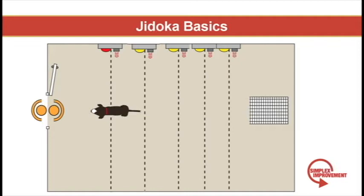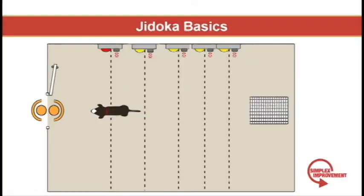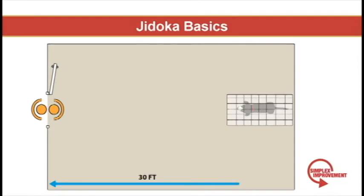If I want to prevent defects, I'd have to go back to the source. The source is the process I used to lock Apple's kennel. If I mistake-proof this process, then I actually wouldn't need any motion detectors. Building quality into a process to prevent defects is a major component of Jidoka.